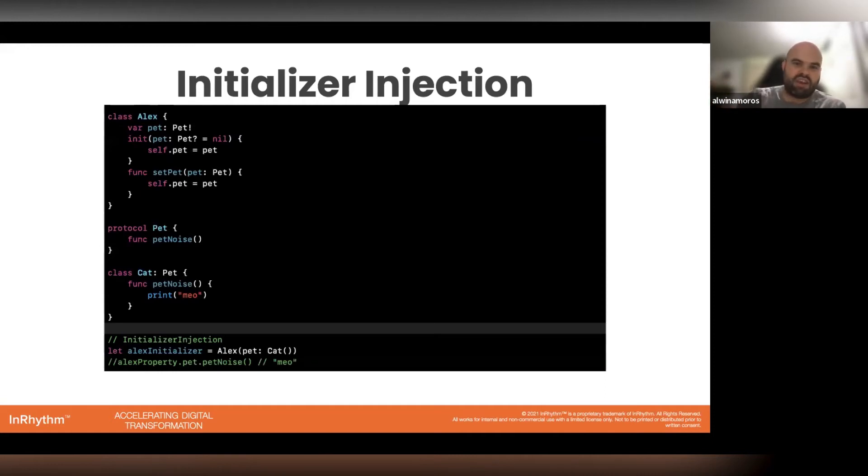So for initializer injection, I have a simple class Alex. I have a pet that conforms to the protocol pet. And you have three ways of actually setting your variable pet.